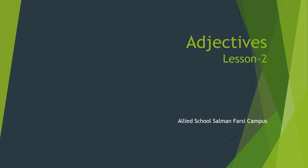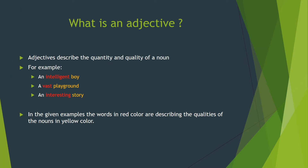Bismillahirrahmanirrahim. My dear students, Assalamu Alaikum. Here we have the second lesson of Step by Step English Grammar Six. The topic of this lesson is adjectives. What is an adjective? Adjectives basically describe the quantity and quality of a noun.